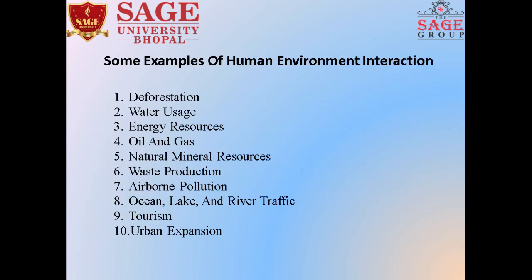Some examples of human-environment interactions are deforestation, water usage, energy resources, natural mineral resources, dust production, air and water pollution, ocean and lake impacts, tourism, and carbon emissions. Deforestation, dust pollution, and air and water pollution are among the negative impacts of human interaction with the environment.